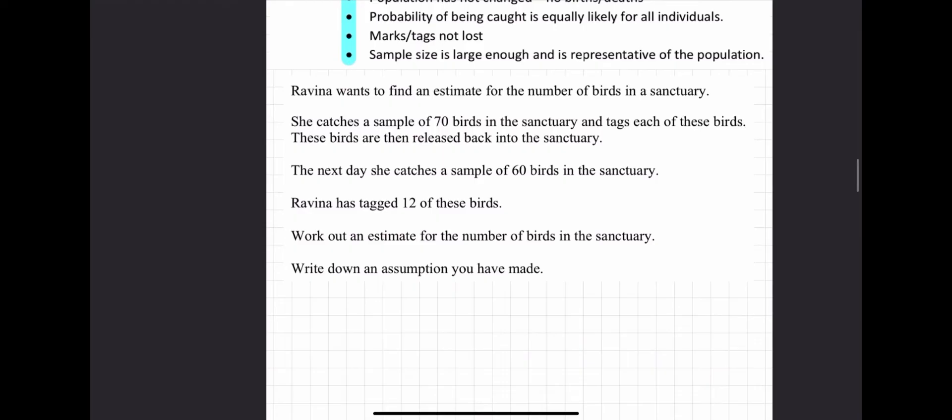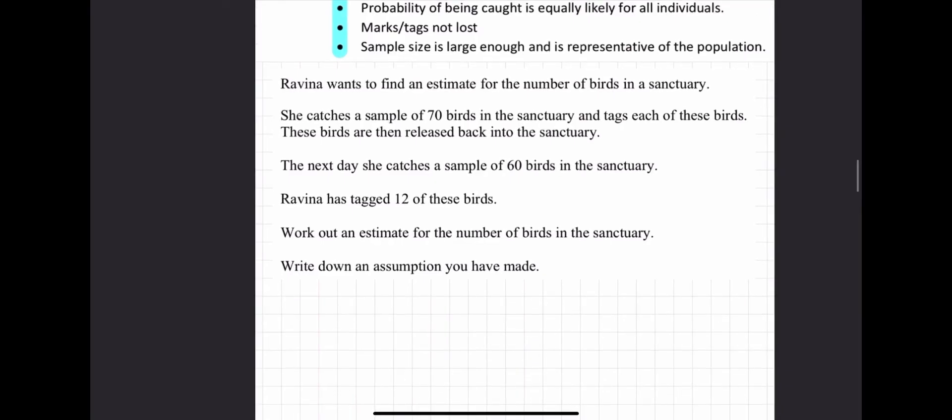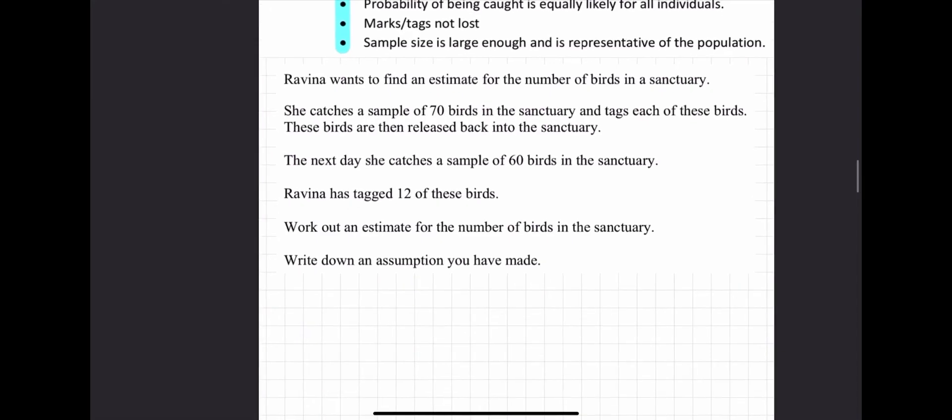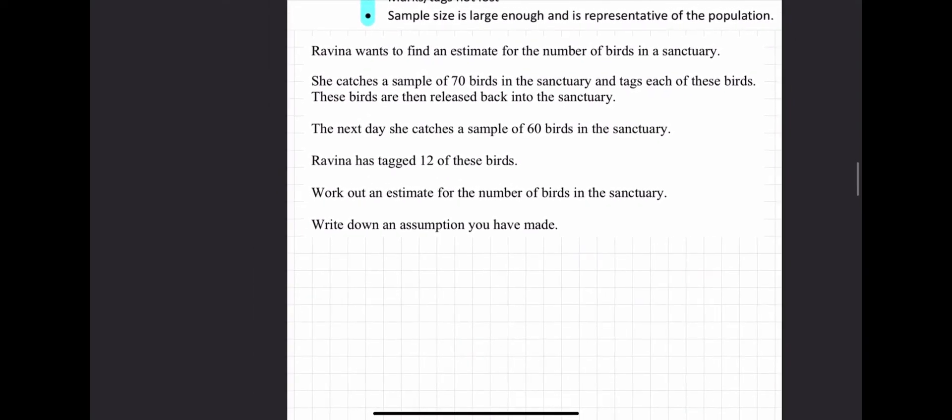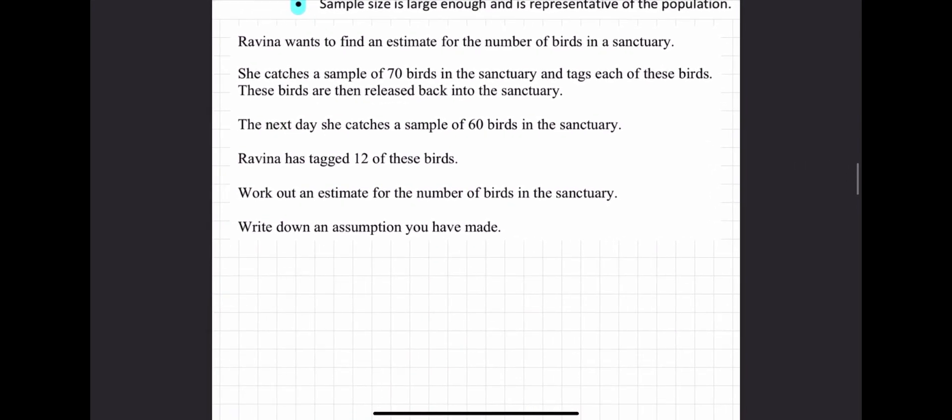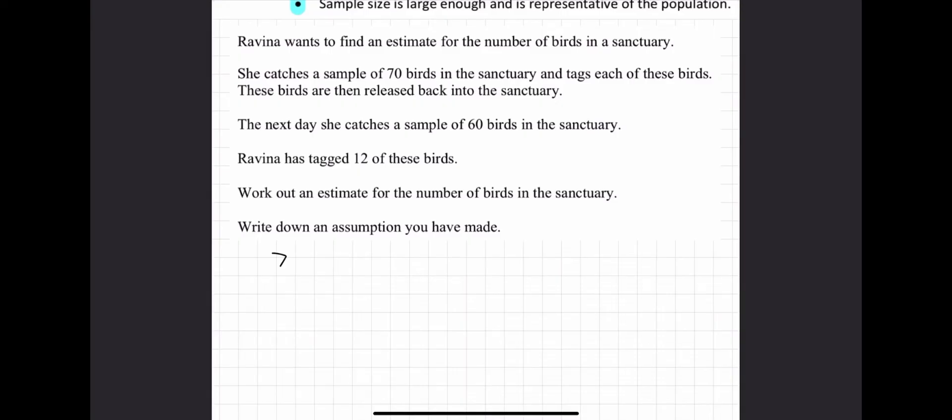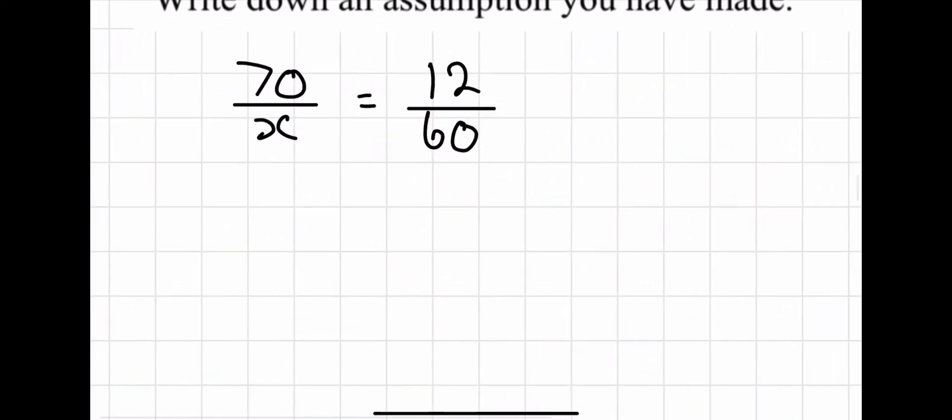Right, now we've got Ravina wants to find an estimate for the number of birds in the sanctuary. She catches a sample of 70 birds in the sanctuary and tags each of these birds. These birds are then released back into the sanctuary. The next day, she catches a sample of 60 birds in the sanctuary. Ravina has tagged 12 of these birds. Work out an estimate for the number of birds in the sanctuary. So, her sample is 70 over the population which we don't know. We know she's tagged all those 70 birds. And then the next day, she does a sample of 60. But we know that 12 of them are tagged out of the population of 60.